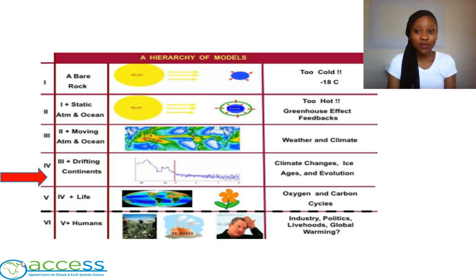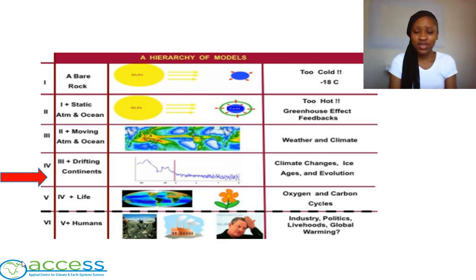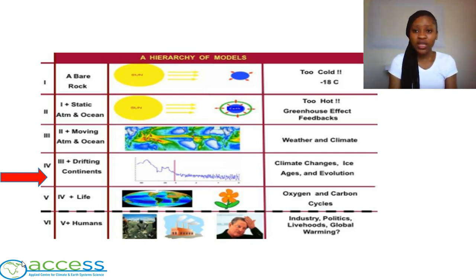On the hierarchy of models we are at number four, which is made up of drifting continents, climate changes, ice ages and evolution. In the beginning we learned about the Big Bang theory and how everything in the Milky Way galaxy came into existence. We then learned about the earth's temperatures — not too hot nor too cold, but just right for life. We learned that the earth's distance from the sun is not the reason why it is habitable. We also learned about circulating climate, circulating oceans, and most recently, modeling. We learned that a model is representative of a certain phenomenon, that there are different types of models, and most importantly, that all models are wrong but some models are useful.